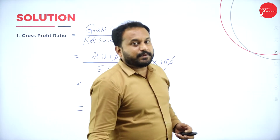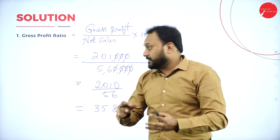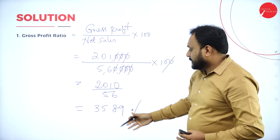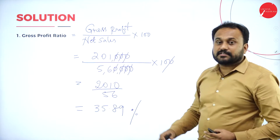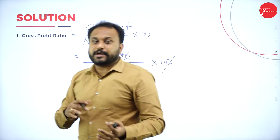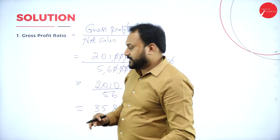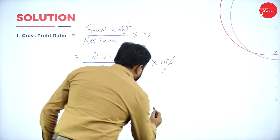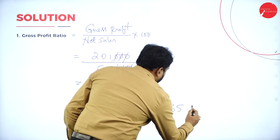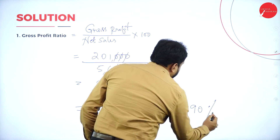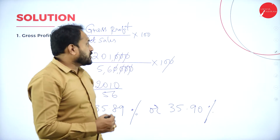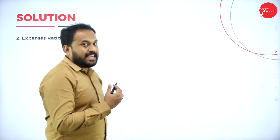I went with the formula, substituted the values, and got 35.89% — or you can write 35.90%. Both are correct. That is the gross profit ratio.